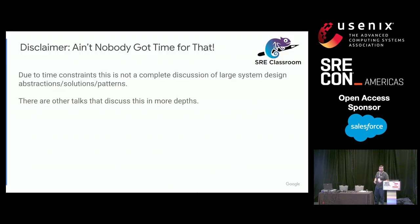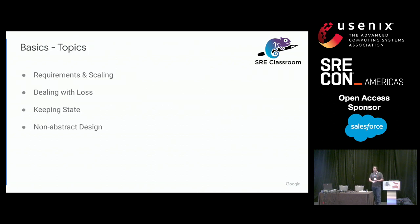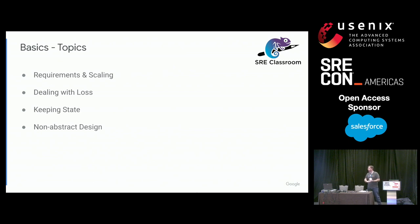Let's cover off some of the basics of distributed systems. We can't cover everything, so there are four key areas I want to go into today. There are plenty of other talks here at the conference and published online if you want further detail. The four things I'd like to cover are: requirements and scaling, failure, state management, and the non-abstract part — figuring out the number of machines we need to build the system.